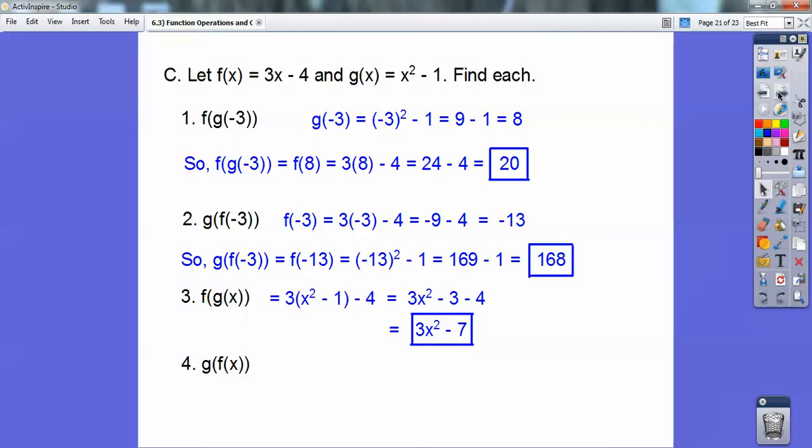All right, and then let's do the other way around. Let's do g of f of x. So this time I'm going to plug in this dude, 3x minus 4, in right there. So it's 3x minus 4 squared, and don't forget you're minus 1.